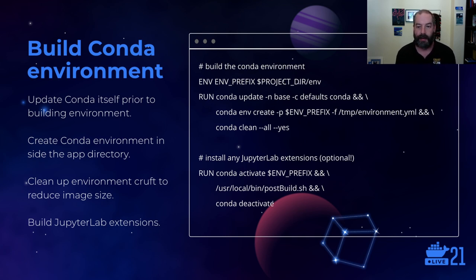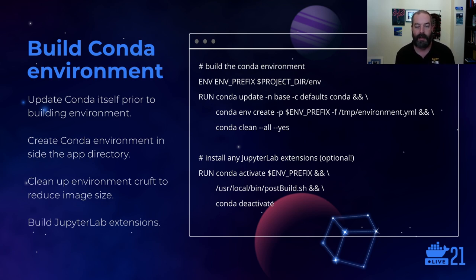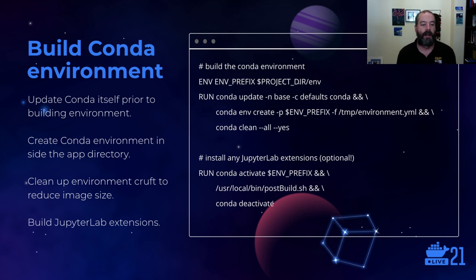Now we're ready to build the Conda environment. We run three commands in one RUN instruction in the Dockerfile: first, update Conda to make sure we have the most recent version; then actually create the Conda environment; and then do a bit of cleaning to delete cruft not required at runtime, which helps reduce overall image size. Finally, we activate that Conda environment and, if necessary, run a post-build file — this is for older versions of Jupyter where you need to build lab extensions, activate the environment inside the container image, run the post-build script, and then deactivate.